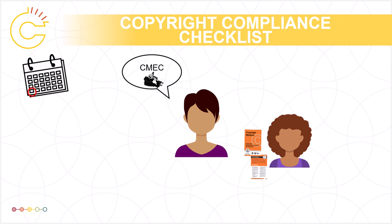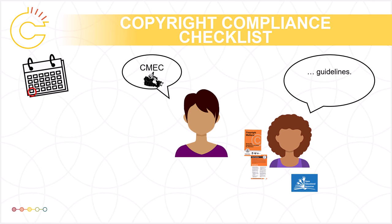Taylor heads right down to the principal's office to share the useful C-MEC copyright resources they found during course prep on Sunday night, and also wants to make sure the principal knows about open educational resources. Much to Taylor's surprise, the principal was already reviewing new copyright guidelines issued by the Municipal School Division. The principal points out that C-MEC's guidelines are just that — guidelines — and it's important to remember that individual school divisions or boards may have their own guidance for teachers. The principal also notes that at the next staff meeting, copyright and open educational resources will be discussed for everyone's benefit.